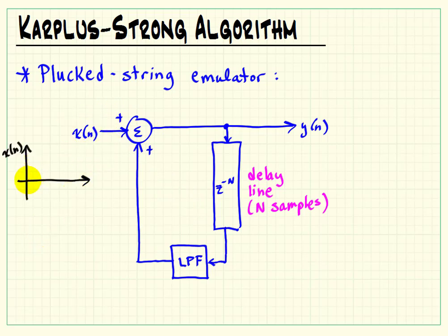We also add in an external input signal x(n). x(n) is defined as a pulse of noise. This white noise is of sufficient length that it fills the delay line entirely, but then x(n) has to shut off immediately.